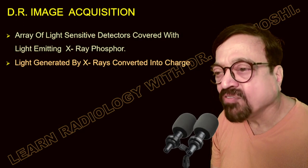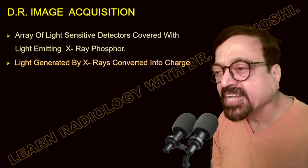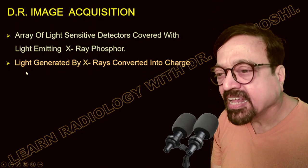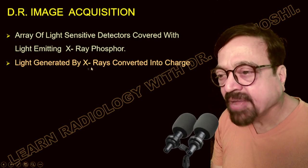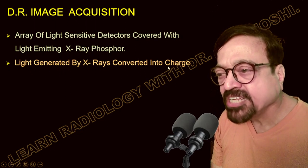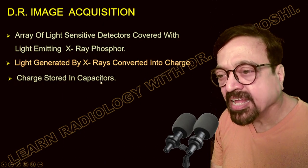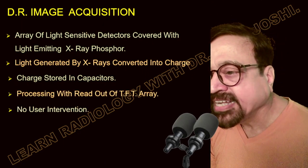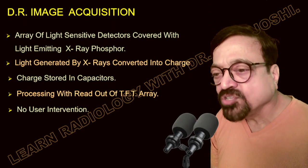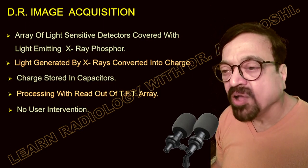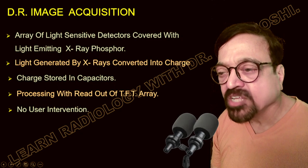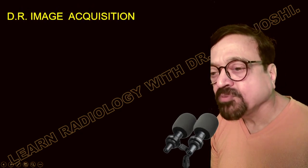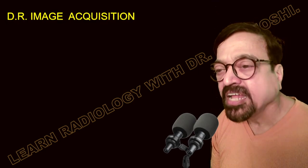In DR image acquisition, there is an array of light-sensitive detectors covered with a light-emitting x-ray phosphor. Light generated by x-rays is converted into a charge, which is stored in a capacitor. Processing is then done with read-out of the TFT array, and no manual intervention is required in this entire process. This makes it very easy to operate, less troublesome for the patient, and good for patient throughput.